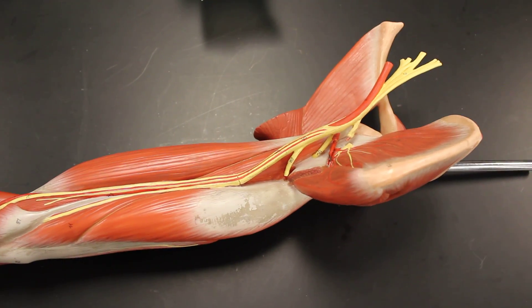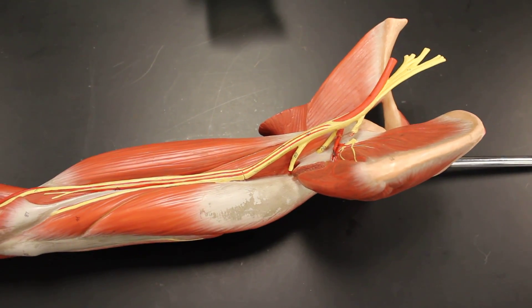As we talk about the systemic circulation in the extremities, we're going to start with the arm. And it's actually fairly simple.